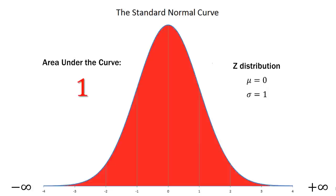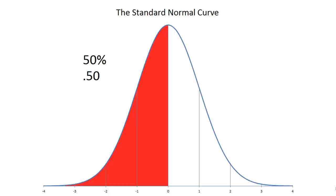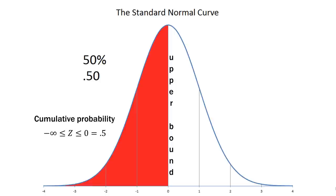A key property of this curve is that the probability underneath it adds up to one. We can use this — along with the symmetry of the curve — to answer very helpful problems. If the entire curve adds up to one, then exactly half has a probability of 0.5 or 50%. The cumulative probability from negative infinity up to the mean of zero equals 0.5, because that is exactly half of our standard normal curve.